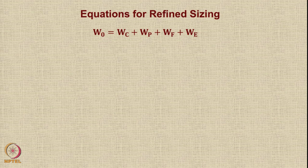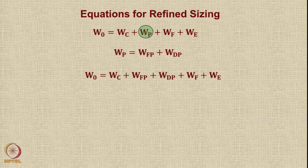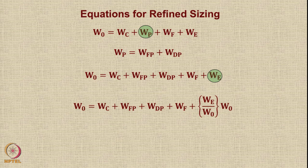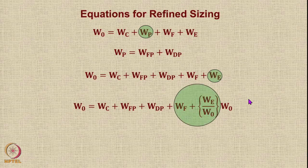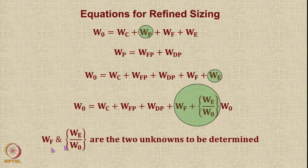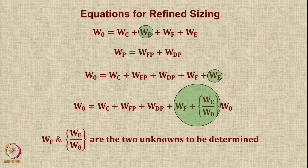The equations for refined sizing: W0 is the summation of crew, payload (fixed plus droppable), fuel, and empty weight. Empty weight is expressed as the empty weight fraction times W0, making this an iterative equation since W0 appears on both sides. The two remaining unknowns are W_fuel and W_empty/W0. In initial sizing the two unknowns were the fuel weight ratio and empty weight ratio; in refined sizing we directly calculate W_fuel (not the ratio), while empty weight still uses the ratio approach — because the method can handle payload drops or sudden reductions in aircraft weight.